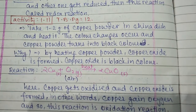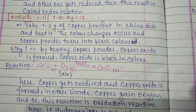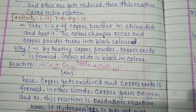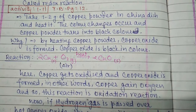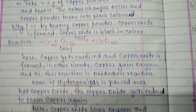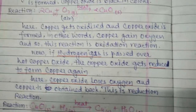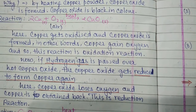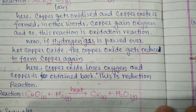According to Activity 1.11 from page number 12 of the textbook, copper powder in a china dish is heated. The copper powder becomes black because when copper is heated, copper oxide is formed. This is an oxidation reaction because copper gains oxygen and becomes copper oxide, which is black in color. The reaction is: Cu + O2 → CuO. Copper gets oxidized to form copper oxide.